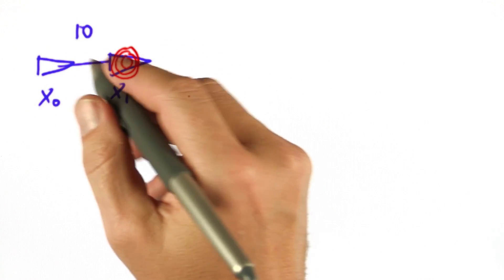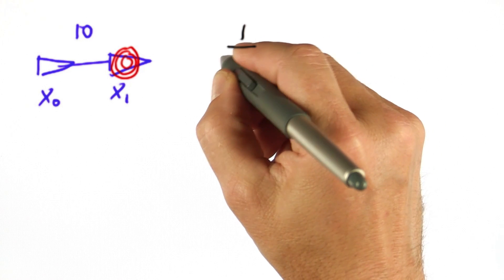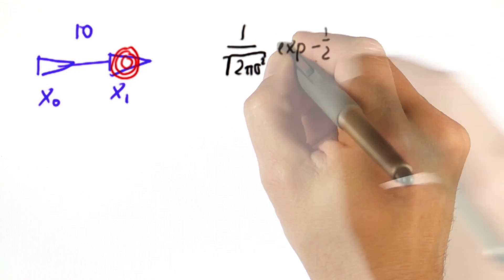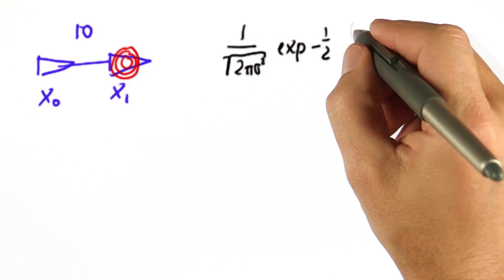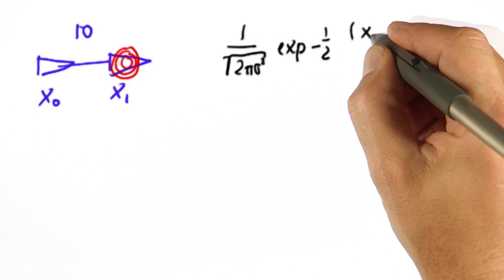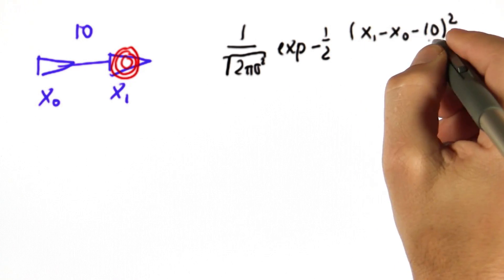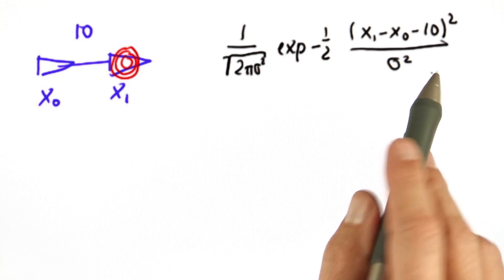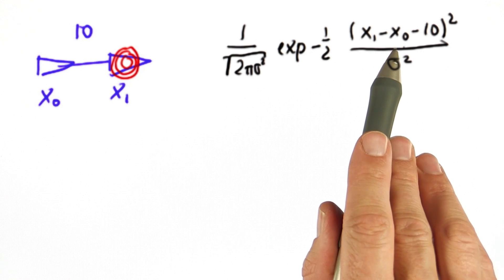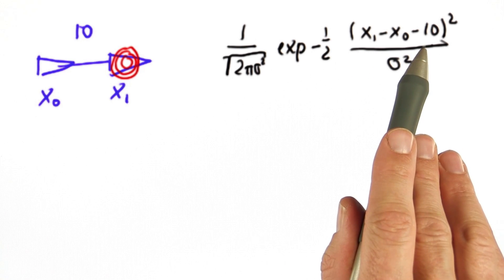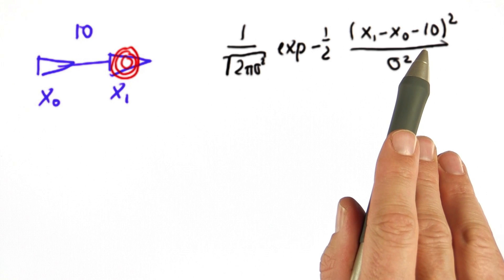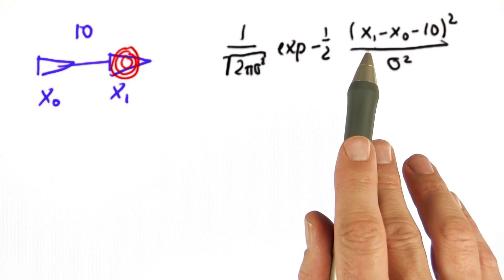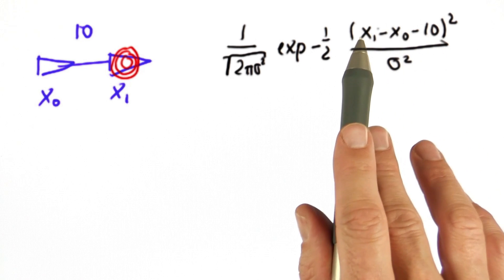When we talked about Kalman filters, we talked about Gaussians, and this uncertainty might look as follows. There's a constant, exponential, in the expression that x1 minus x0 should relax to 10 but might deviate from it. This Gaussian constraint characterizes a constraint between x1 and x0 and wishes them to be exactly 10 apart. The Gaussian is maximum where this equation is fulfilled, but if the residual is not equal to 0, there's still a probability associated with it.